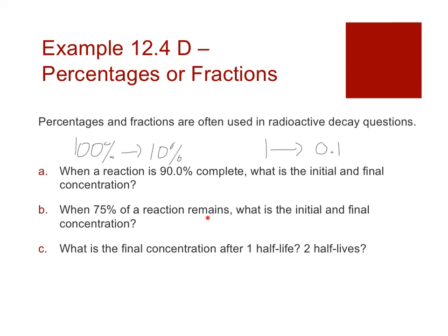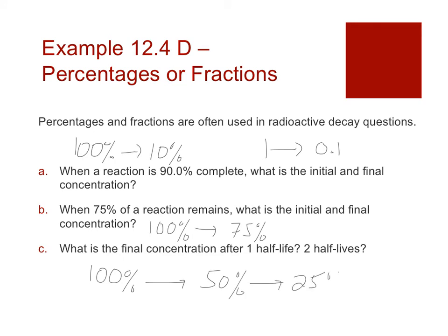When 75% remains, the initial is still 100% and the final is 75%—you only lost 25%. After one half-life starting at 100%, you have 50%. After a second half-life, you have 25%. After a third, 12.5%. Don't let the lack of information stop you—you can start with percentages and fractions as your initial and final amounts. Just look at the words carefully and take note of what variables you're given.